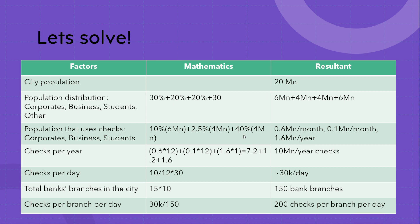Then there are students. From the 4 million students, almost 40% pay their fees by checks. So 40% of 4 million students becomes 1.6 million, but they pay fees once per year, so that is 1.6 million checks per year. Therefore we will now calculate the total number of checks per year.